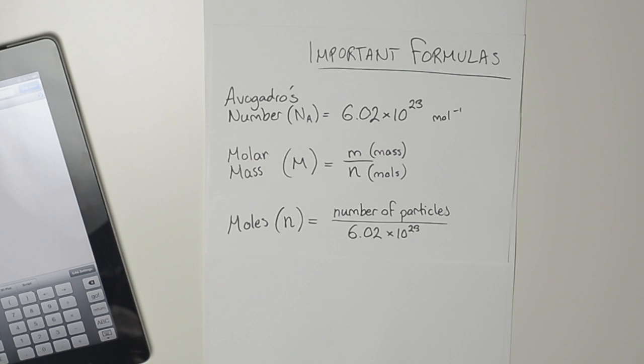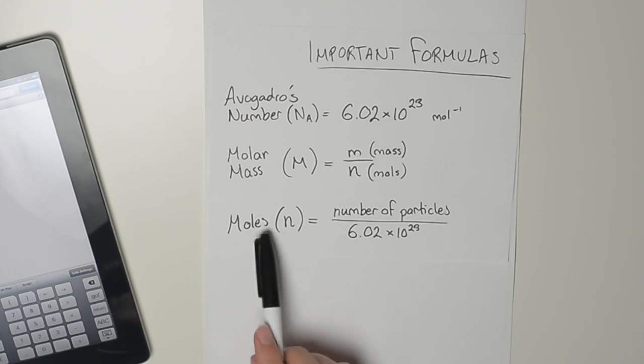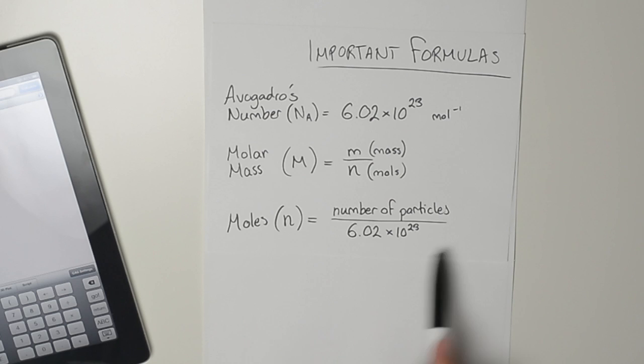Molar mass is the mass divided by the number of moles. I don't think this is a really good equation, but if you like memorizing equations then use it. The number of moles equals the number of particles divided by Avogadro's number.